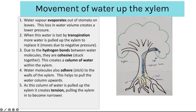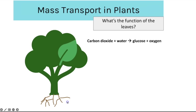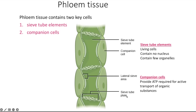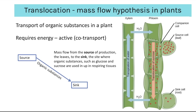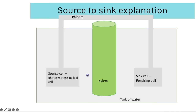The second type of transport is the transport of organic substances produced by photosynthesis through the phloem — called translocation. This is an active process. It revolves around mass flow from the source — where the organic substance is made, in photosynthesising cells — to the sink, which is where the organic substances are used in respiration. The source cell is the photosynthesising cell, connected via the phloem to a sink cell, which is a respiring cell.